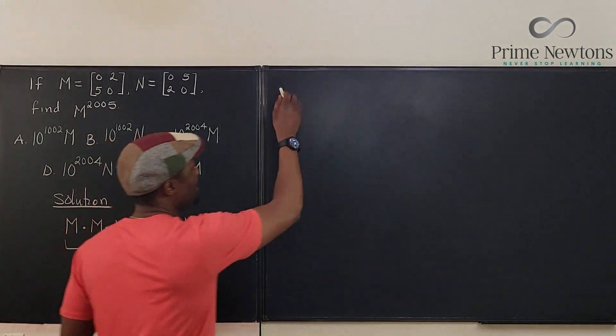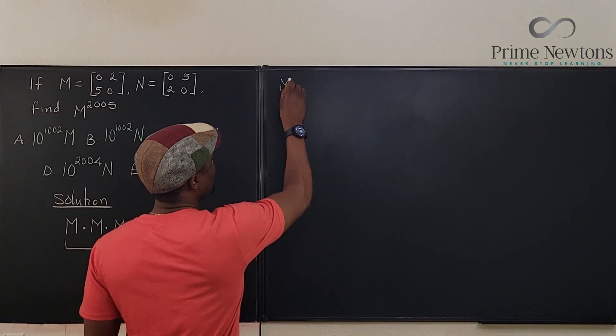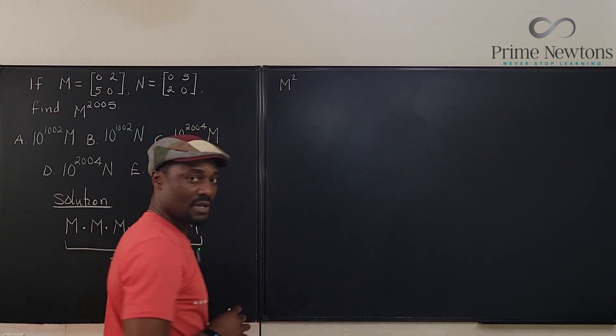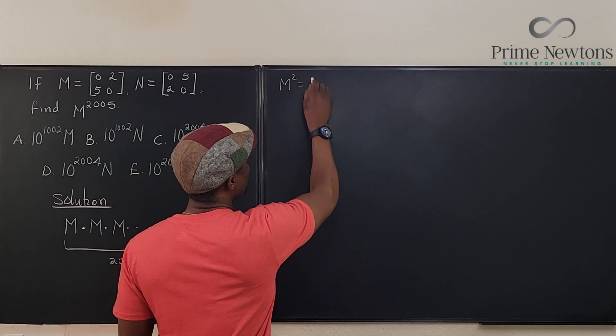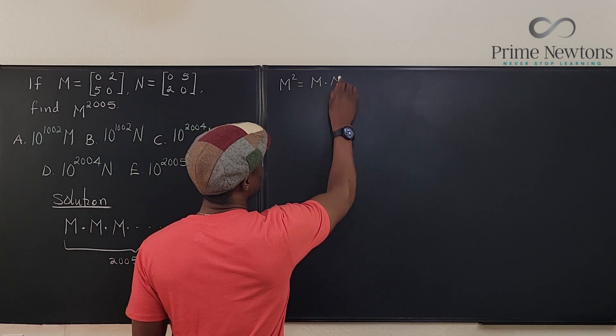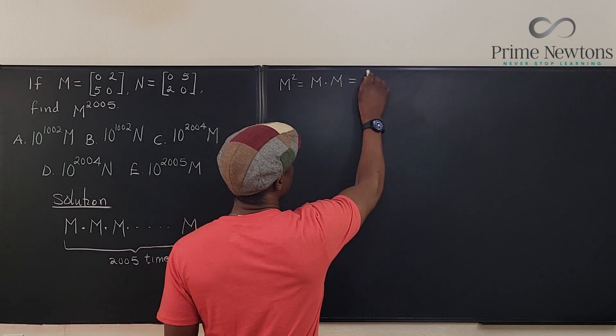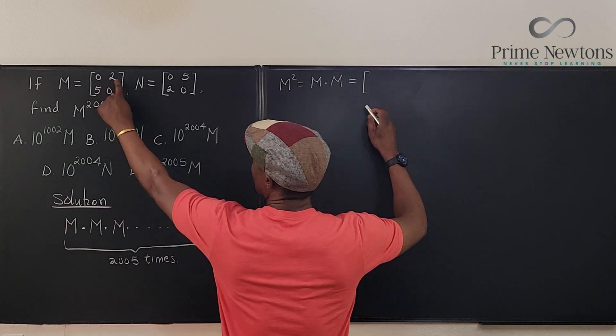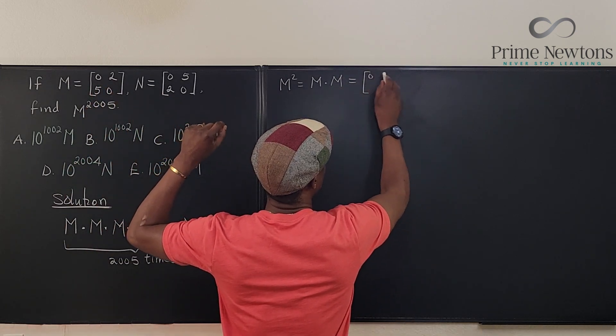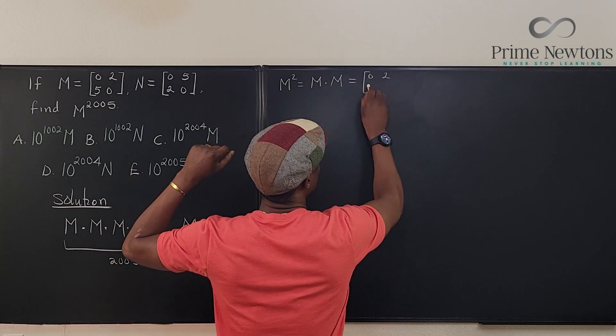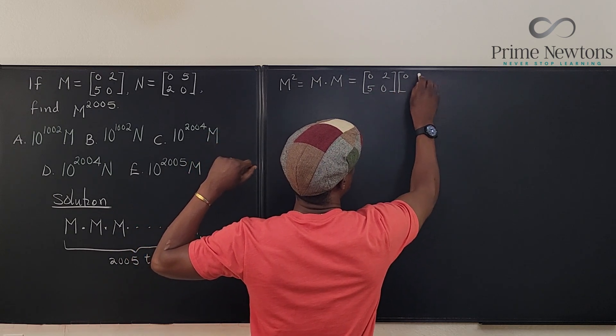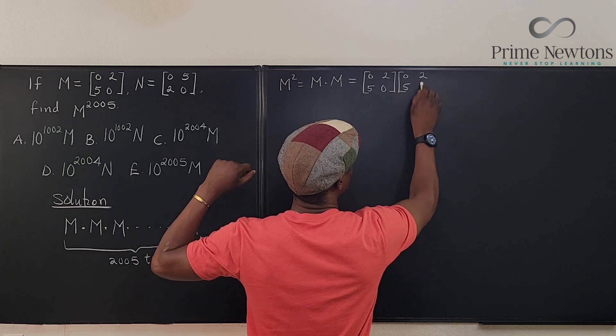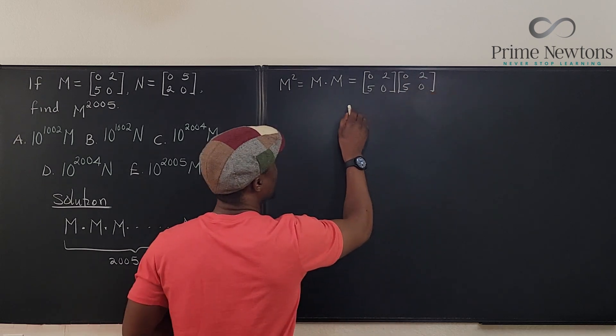We're going to multiply. Let's do M squared first, M times M. So M squared is going to be M times M. And that's going to be this matrix: [0 2; 5 0] multiplied by [0 2; 5 0]. What do I get?